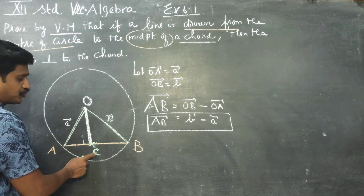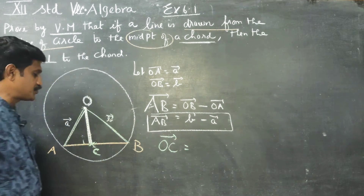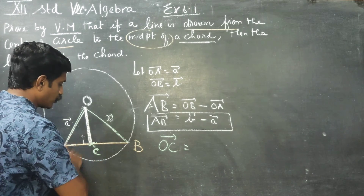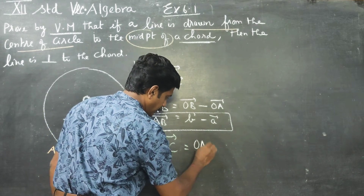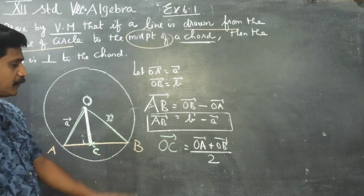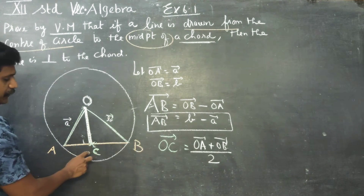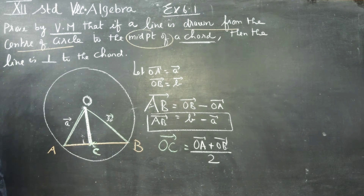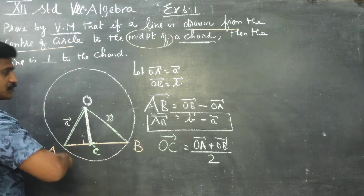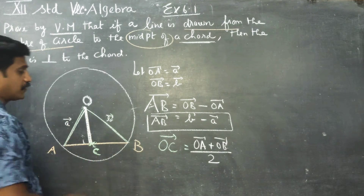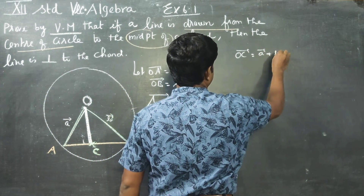Now, C is the midpoint of A and B. From 11th standard midpoint formula, the position vector of C is OC vector = (OA vector + OB vector) / 2. Therefore OC vector = (a + b) / 2.